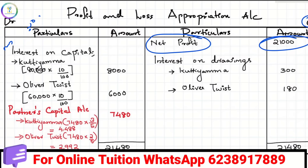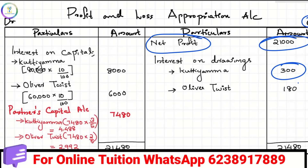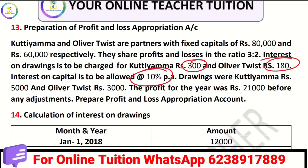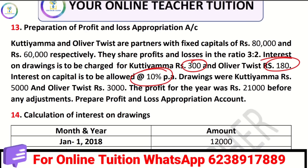In the Profit and Loss Appropriation Account, the net profit and appropriation debit is made. The interest on drawings — 300 and 180 — so the interest on drawings credit is made. Interest on capital: 80,000 at 10% equals 8,000. Then 60,000 at 10% equals 6,000. So interest on capital includes 5,000 and 3,000, totaling 8,000. We have the profit and loss appropriation drawn out.